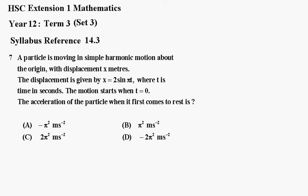First of all, we'll look at the velocity. So we've got x equals 2 sine pi t. So the velocity, which equals dx dt, is equal to 2 pi cos pi t.